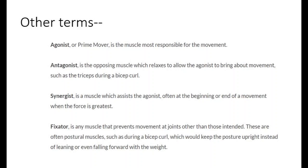We have a few other terms when it comes to muscles. An agonist is also called the prime mover — it is the muscle most responsible for the movement, such as the biceps brachii causing movement of the arm. An antagonist is the opposing muscle, which relaxes to allow the agonist to bring about movement, such as the triceps during the biceps curl.